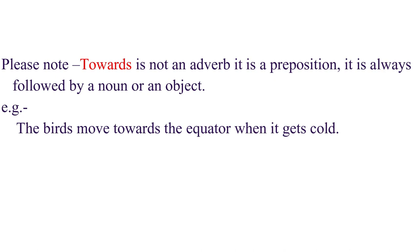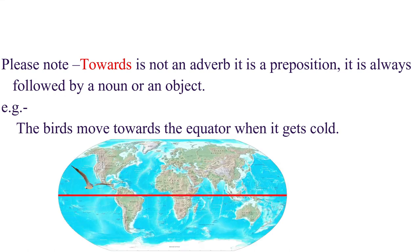Please don't get confused with the word towards. Towards is not an adverb, it is a preposition, as it is always followed by a noun or an object. For example: The birds move towards the equator when it gets cold. In this sentence, we can notice that the word towards is followed by a noun, that is, the equator.